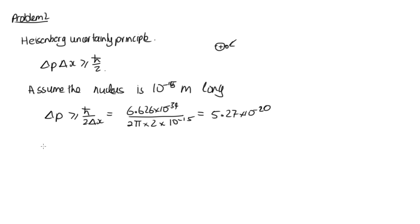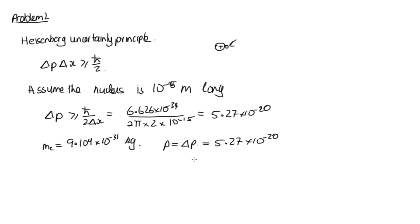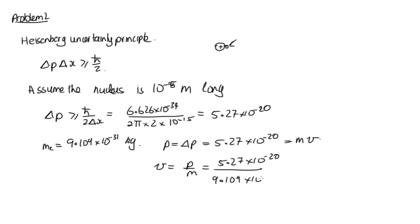We're talking about electrons here, so the mass of an electron is 9.109×10⁻³¹ kg. Taking the momentum equal to its uncertainty, p = 5.27×10⁻²⁰. Since p = mv, the velocity of an electron confined inside the nucleus is p/m = 5.27×10⁻²⁰ / 9.109×10⁻³¹ = 5.78×10¹⁰ m/s, which obviously can't be the case because this is faster than the speed of light, and nothing can travel faster than the speed of light.